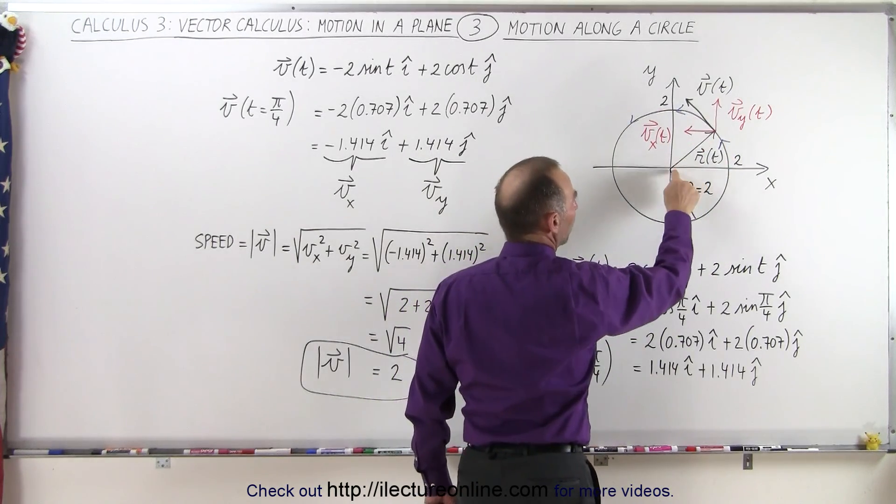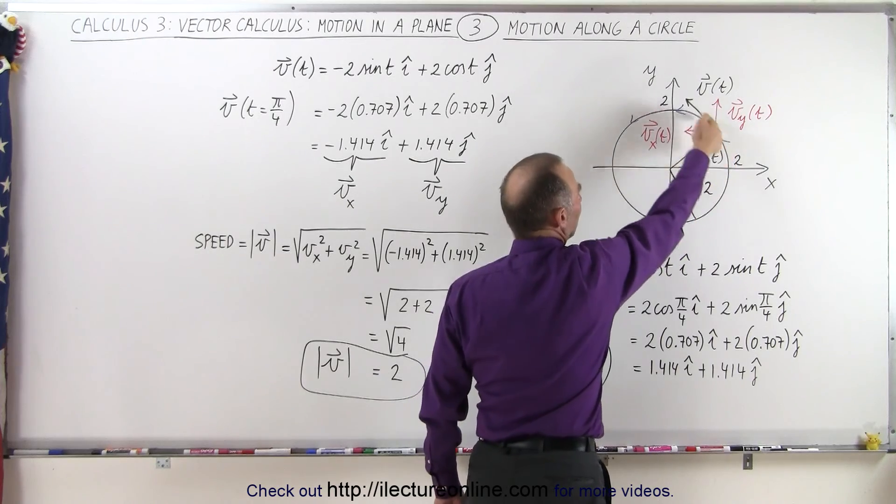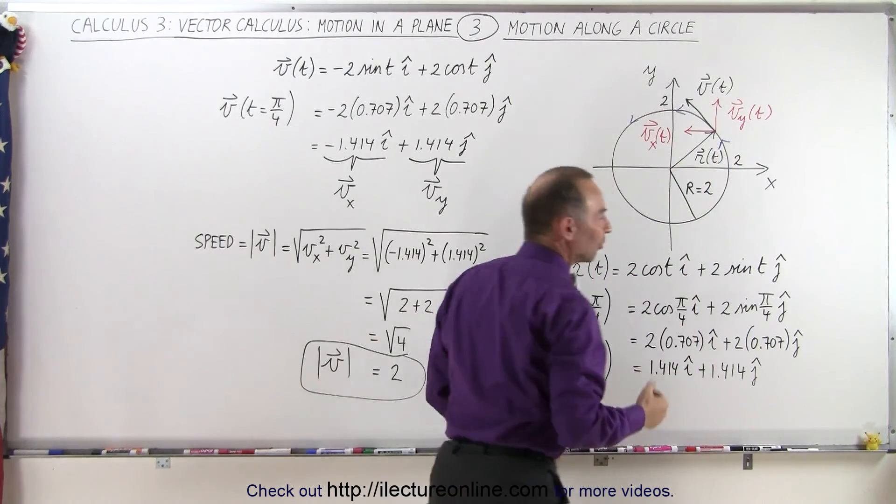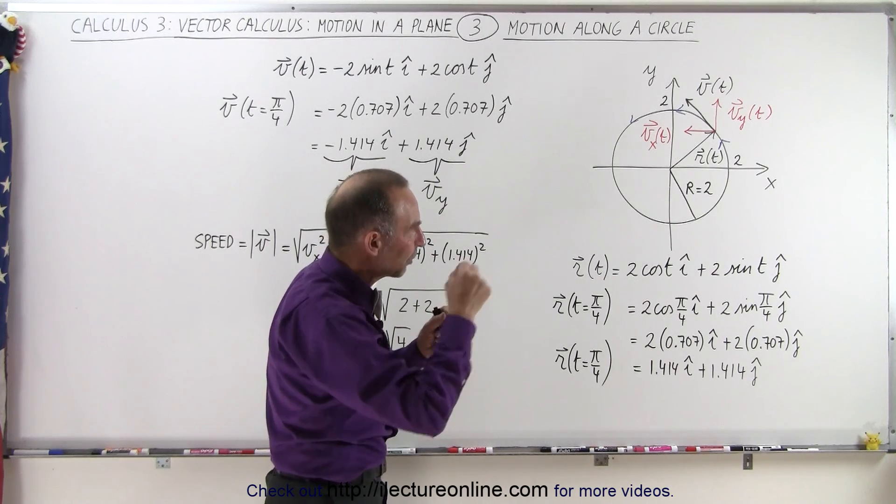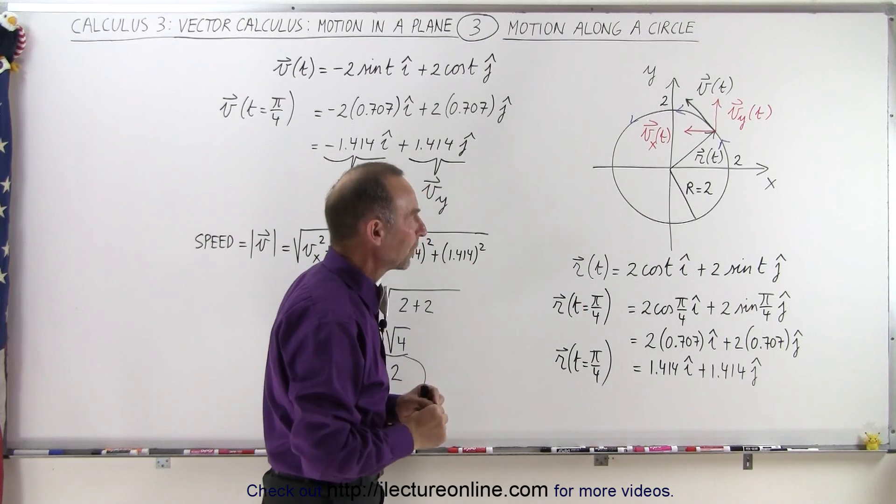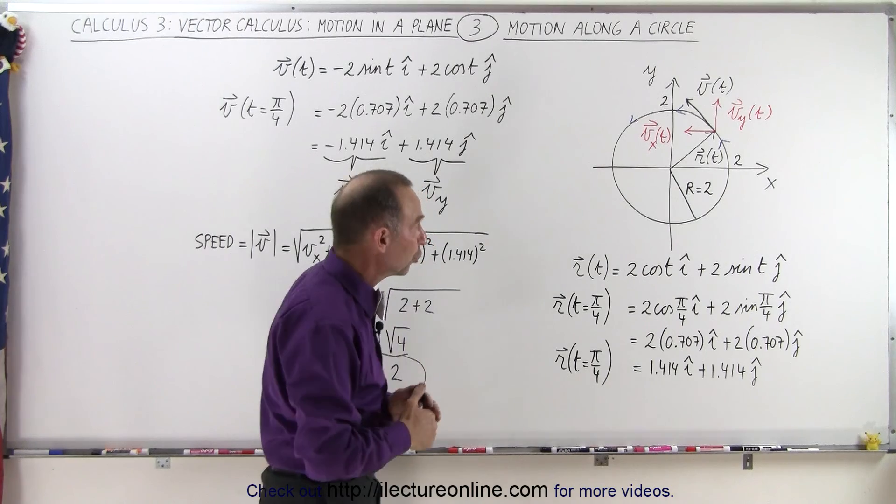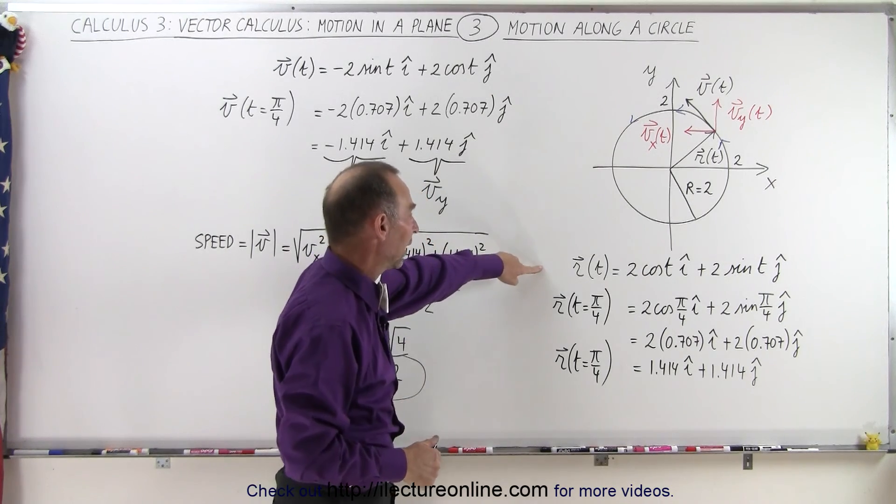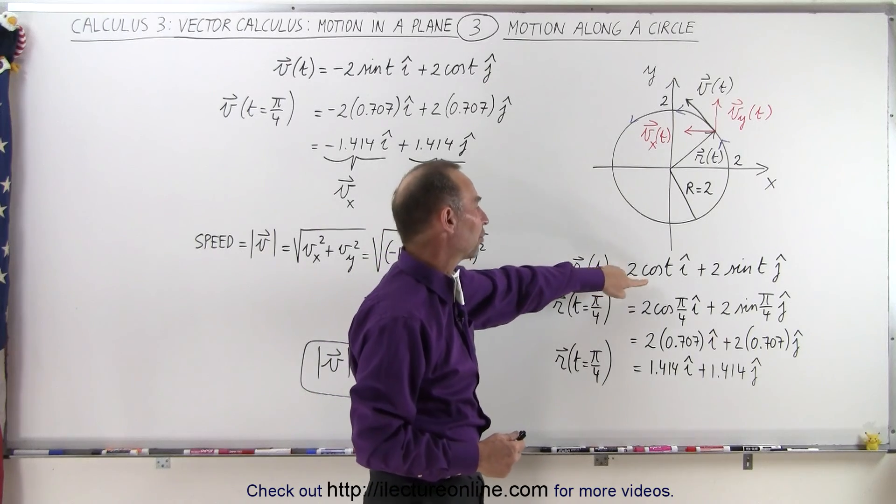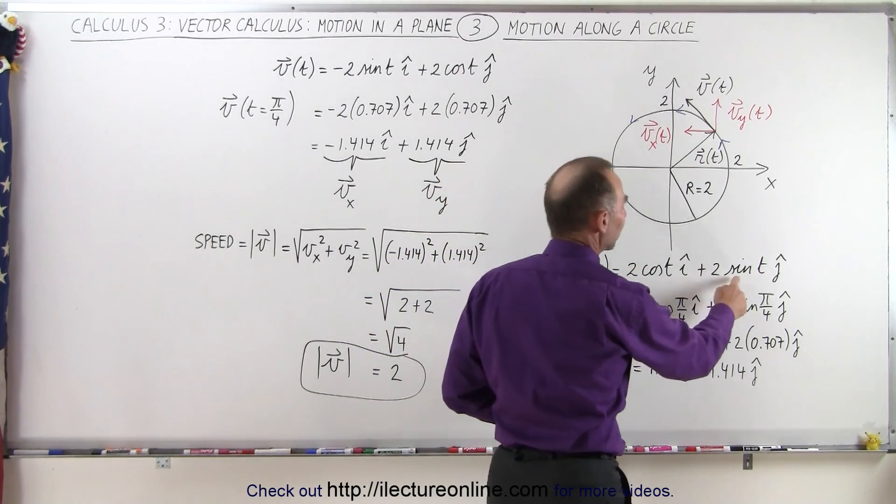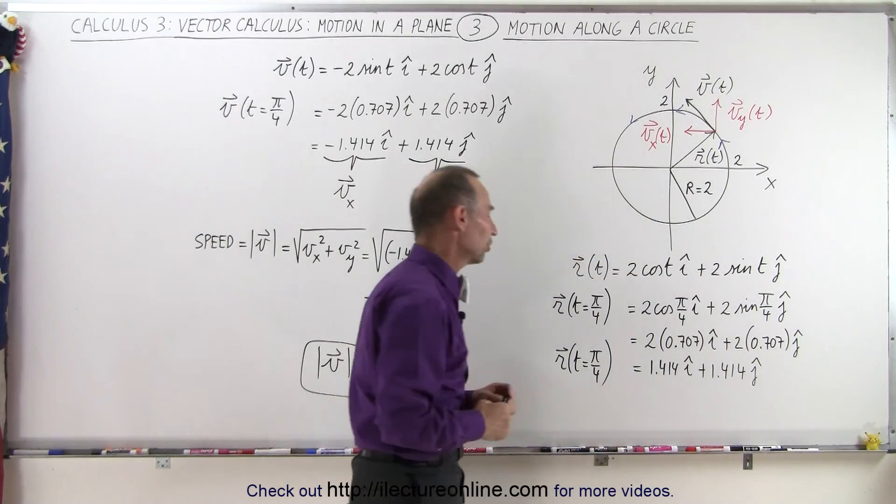Here we have a position vector which points to any point along the circle, and we have a velocity vector which is tangent to the curve and starts at the point where the position vector points to. If the radius of the circle is 2 and the position vector in general has a function of t, t being time, will be equal to 2 times the cosine of t in the i direction plus 2 times the sine of t in the j direction.